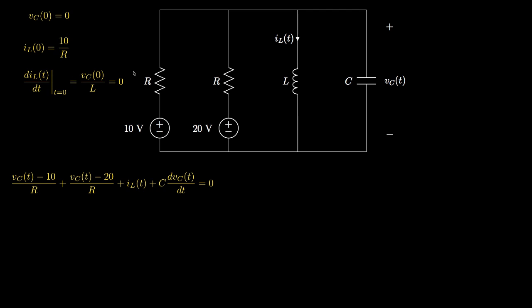After determining the initial conditions, we use Kirchhoff's current law to write a differential equation for this circuit. We assign the bottom node as the reference or ground node, and the top node relative to ground is the capacitor voltage Vc. The current flowing toward the 10-volt source is (Vc minus 10) divided by R, the current toward the 20-volt source is (Vc minus 20) divided by R, plus the inductor current, plus the capacitance times the derivative of the voltage. Summing these four currents out of that node and setting equal to zero gives our equation.